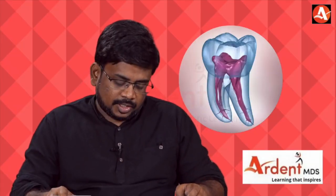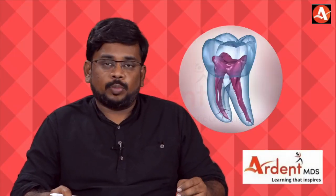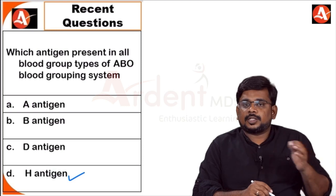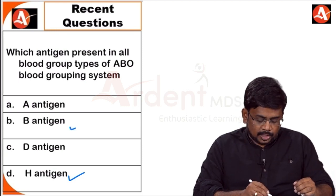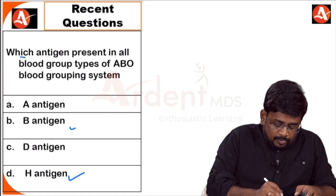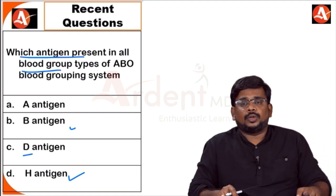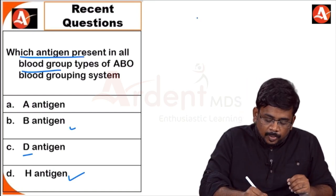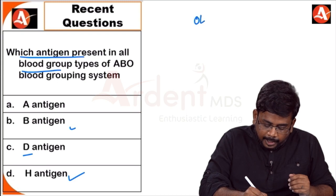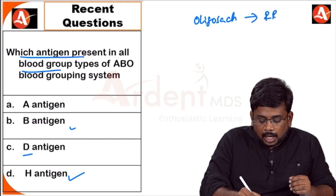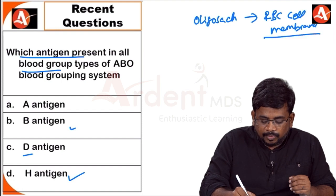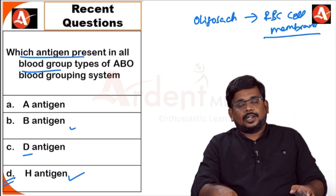The last question: which antigen is present in all blood group types in the ABO system? A antigen is only in blood group A, B antigen only in blood group B, D antigen only in Rh-positive. H antigen — a group of carbohydrates (oligosaccharides) attached to the RBC cell membrane — is present in every blood group type. So the answer is H antigen.